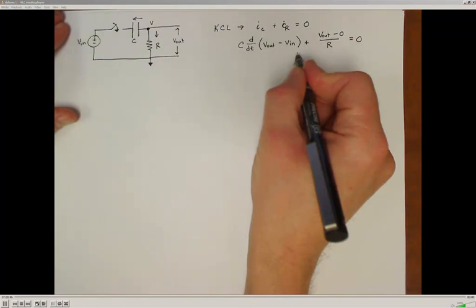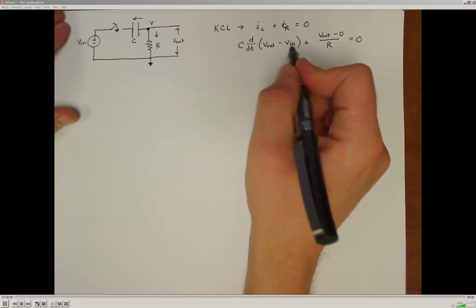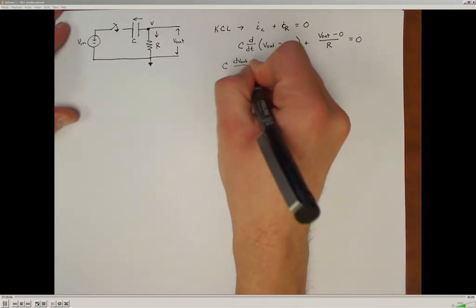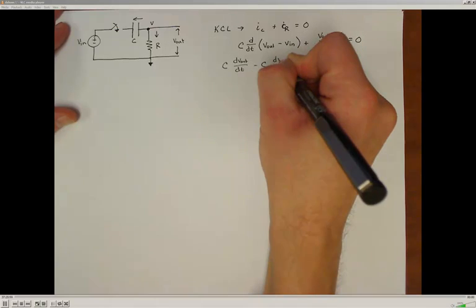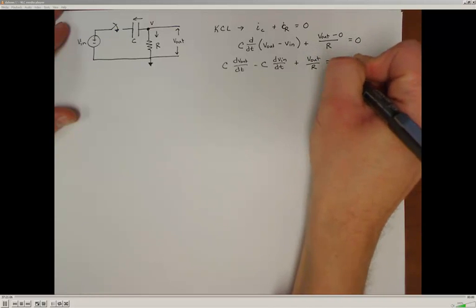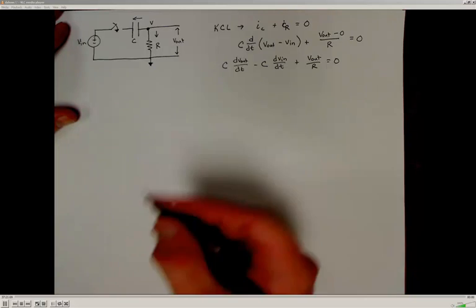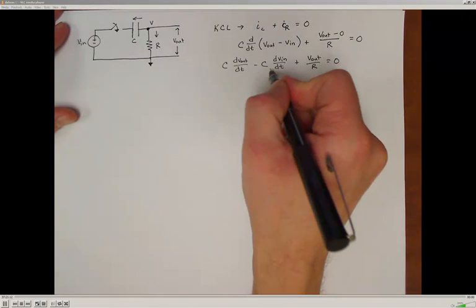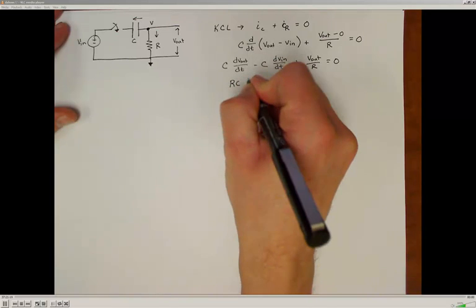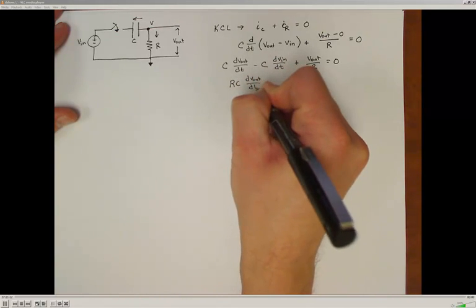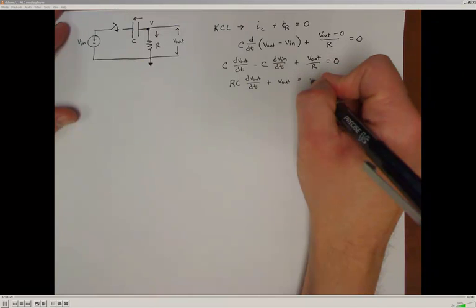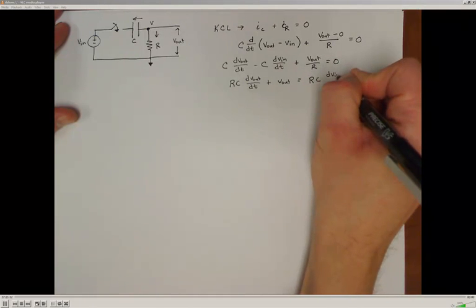Doing some rearranging: both V out and V in can be functions of time, so we get C·dVout/dt minus C·dVin/dt plus Vout/R equals zero. Multiplying through by R and bringing the input term to the other side, we wind up with RC·dVout/dt plus Vout equals RC times the derivative of the input voltage with respect to time.